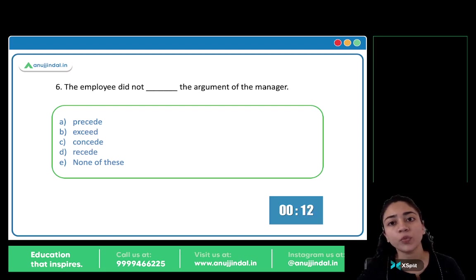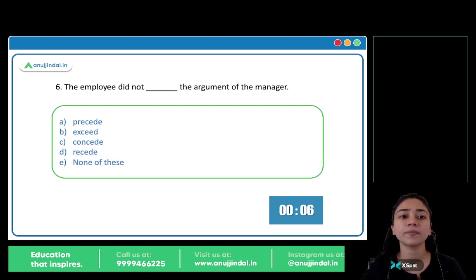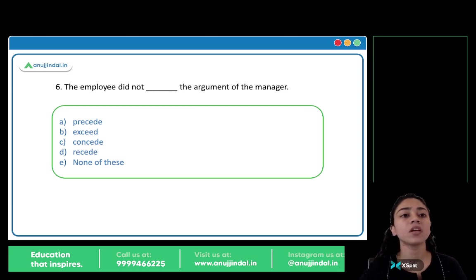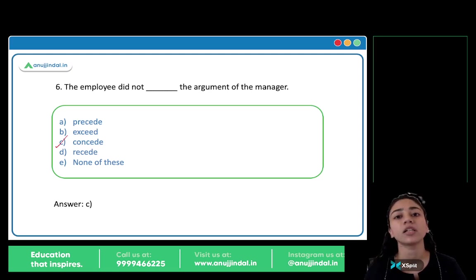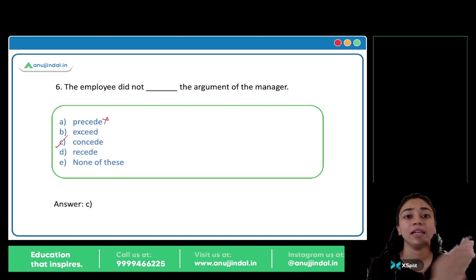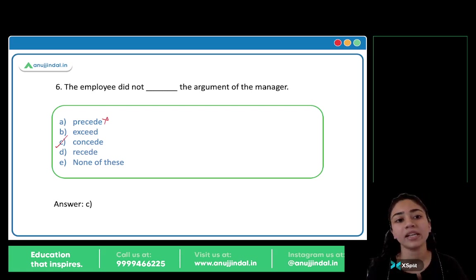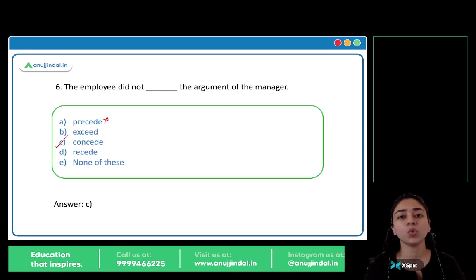The employee did not blank the argument of the manager. Options: A) Proceed, B) Exceed, C) Concede, D) Recede. The answer is option C, concede. Concede means to accept or to agree. The employee did not accept or agree with the argument of the manager. Proceed, exceed, and recede do not make sense in this context. So C is the correct answer.